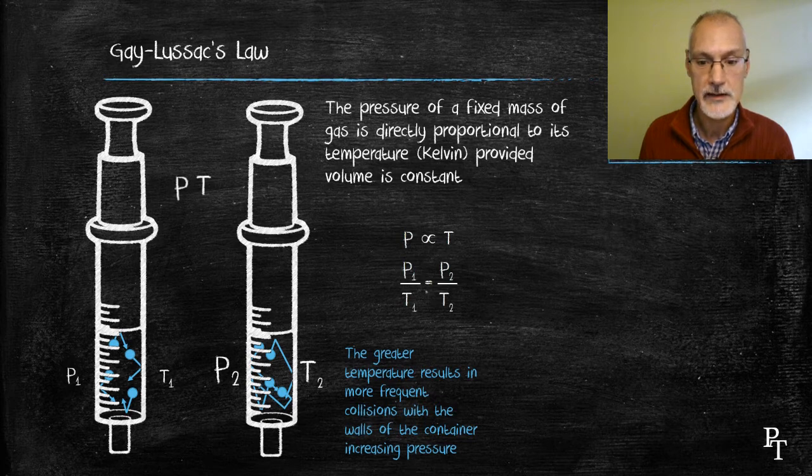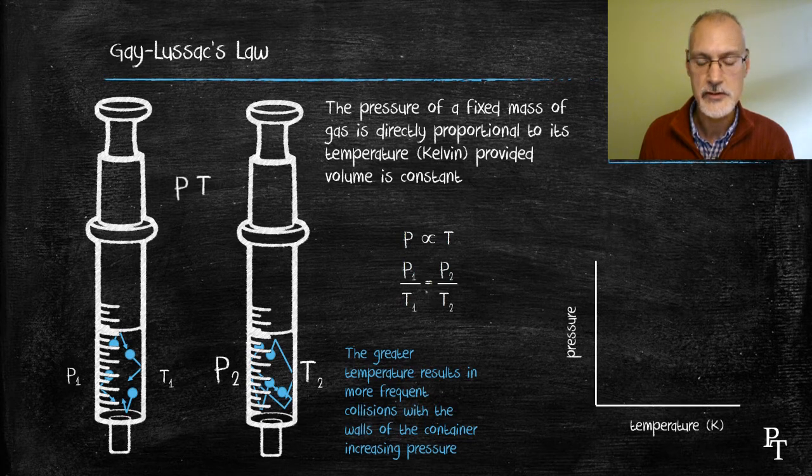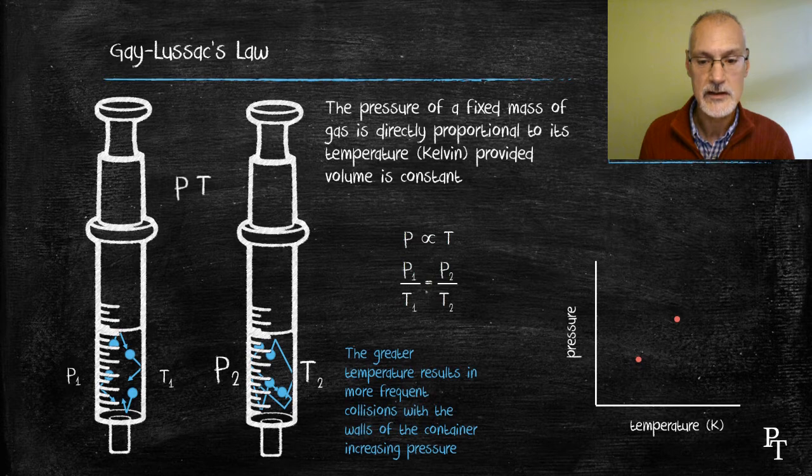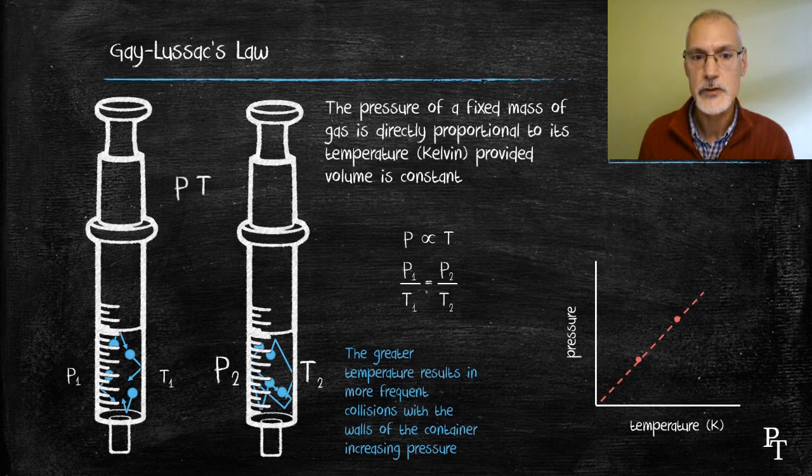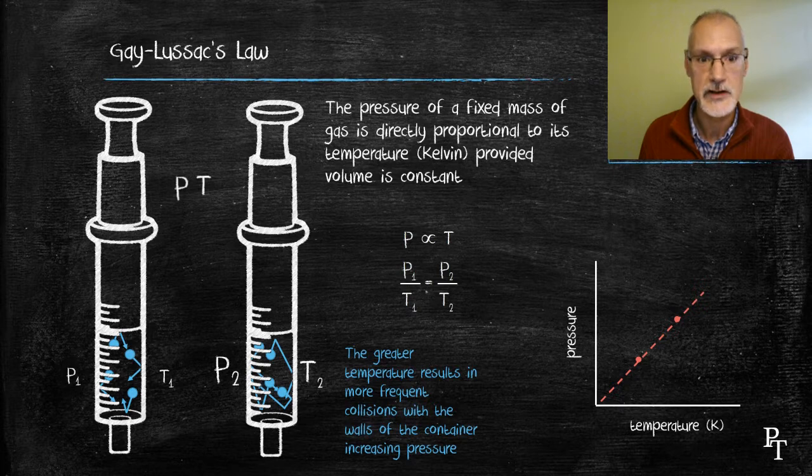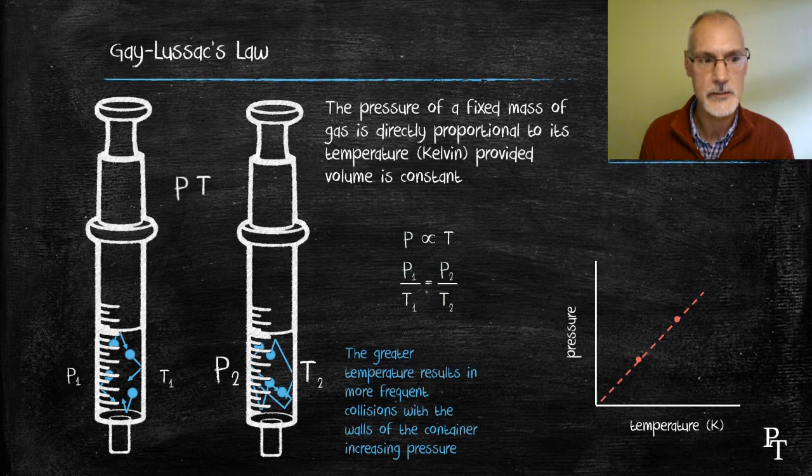Graphically, it will also plot in a directly proportional relationship, giving me a straight line. So the only combination of variables is pressure and volume that result in an inverse relationship. All of the other combinations of variables result in a proportional relationship.